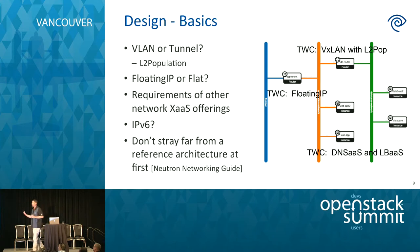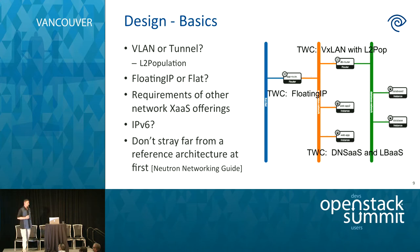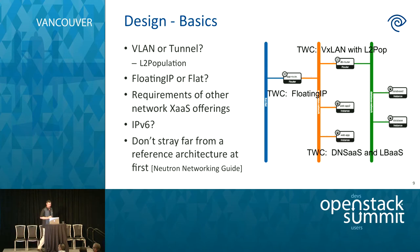When we sat down and looked at what we wanted out of Neutron, we had some basic design principles. Do you want straight VXLAN or tunnel-based? Floating IP or flat networking? Requirements for other networking as a service — if you want load balancing as a service, you've essentially already brought in the need for floating IPs. Do you need IPv6 or not? My recommendation up front is: don't stray far from a reference architecture. The new Neutron networking guide is a decent place to start with full configs and description of the implementation process. I did not have that, and it was a big stumbling block.